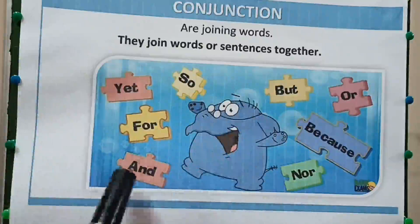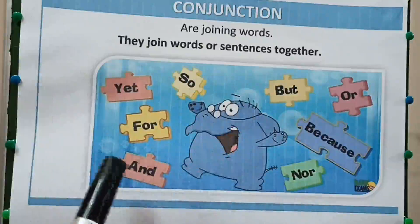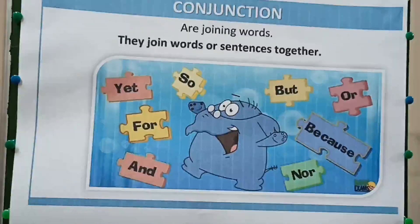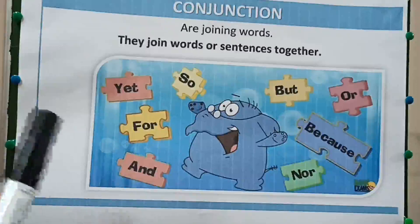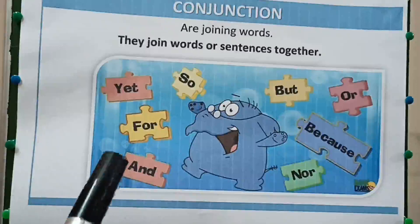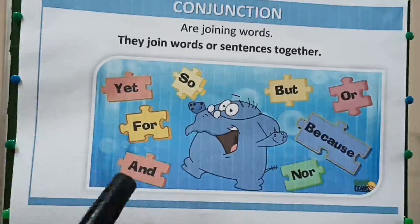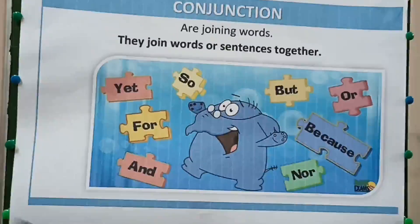And 'and', as I have already told you, is used for similar sentences. Like: I like mangoes and bananas. So for similar sentences, 'and' is used.